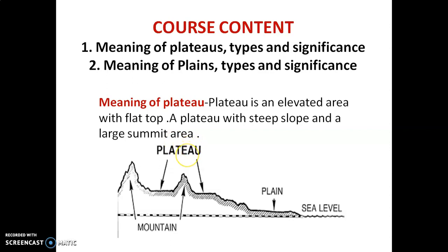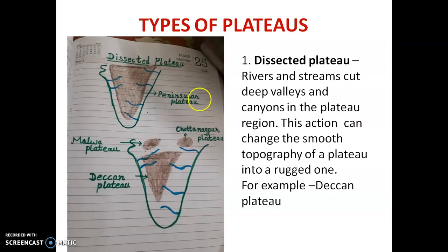As a table is flat at the top, in the same way a plateau is also flat at the top. That's why a plateau is also called table land. There are three types of plateaus. First, dissected plateau.